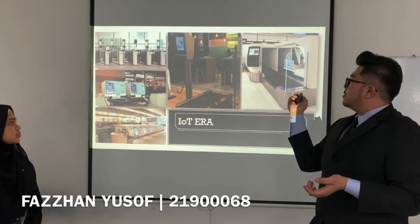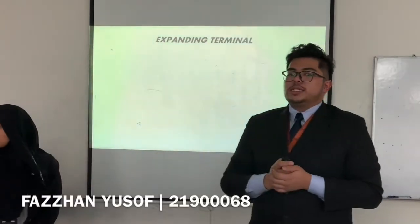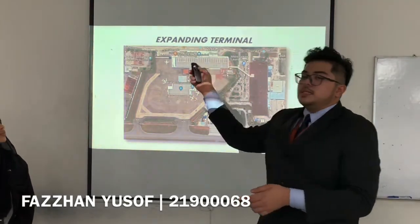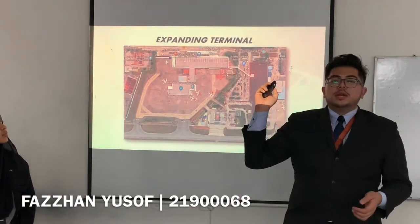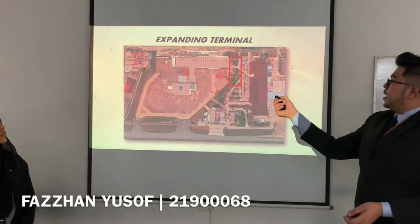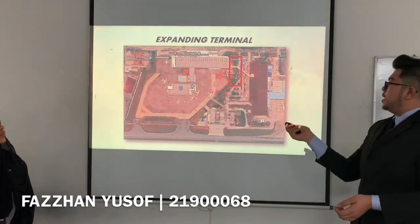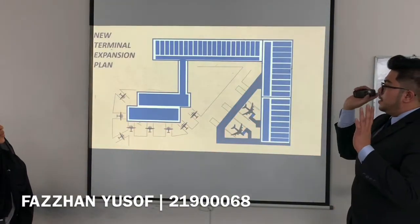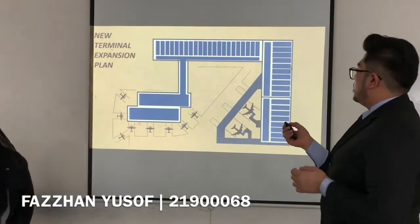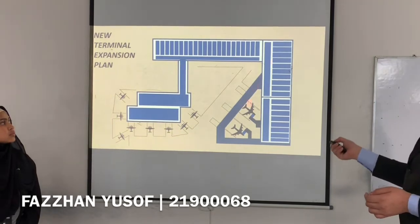Now we're moving to the expanding terminal layout plan. This is the map of Subang Airport. This is the area that we are going to expand — we are going to cut the current plant and expand the footprint of the airport. This is our existing plan of the airport, and this area is the new plan of the airport, which is to accommodate new aircraft.